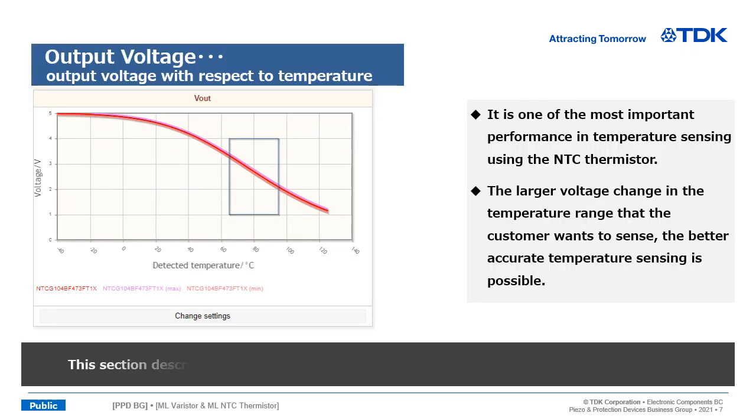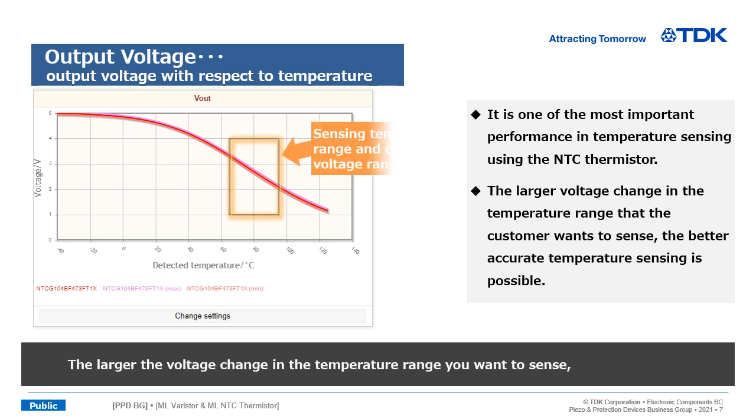This section describes the five output performance. The output voltage curve shows the output voltage with respect to temperature changes. The larger the voltage change in the temperature range you want to sense, the more accurate temperature sensing is possible.